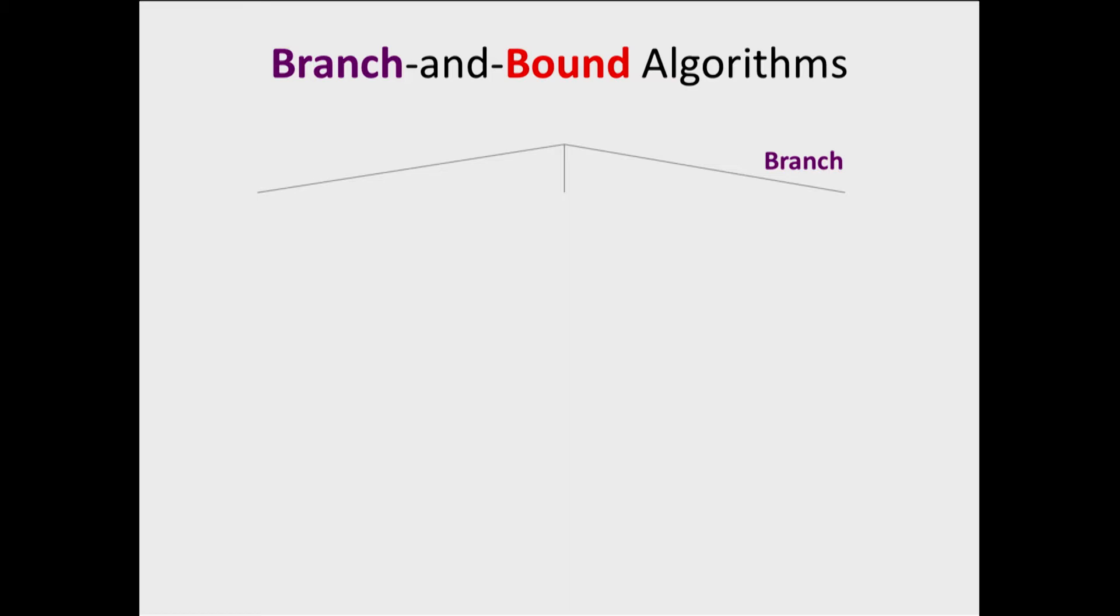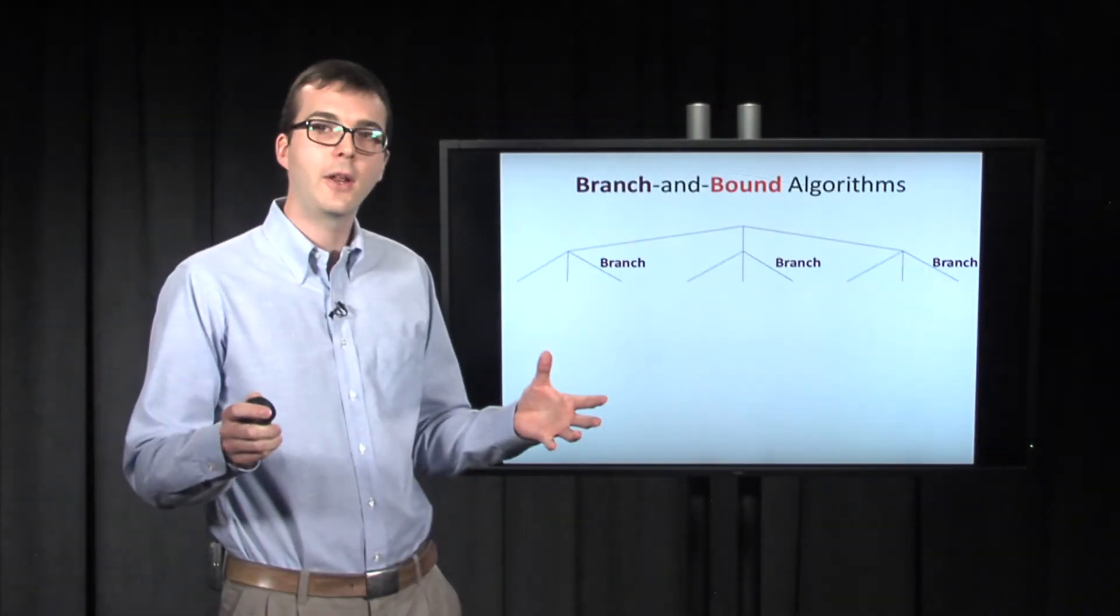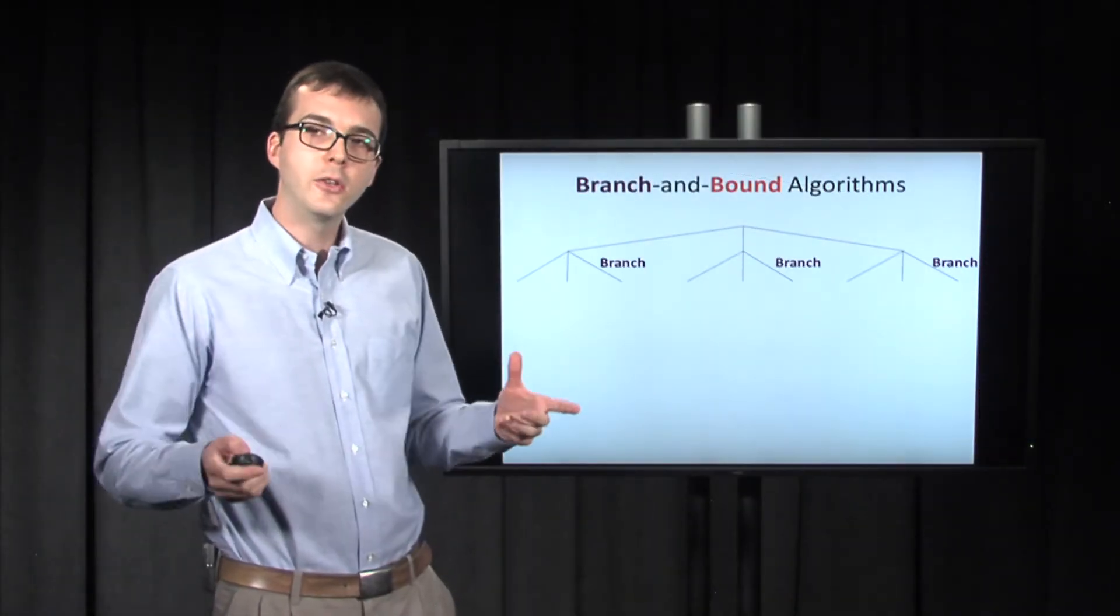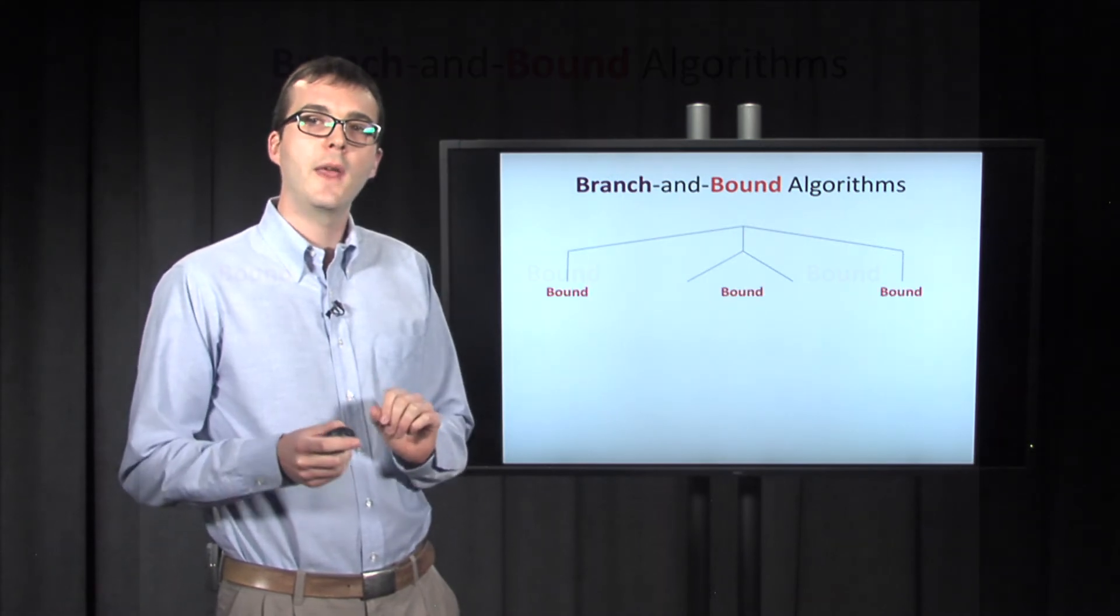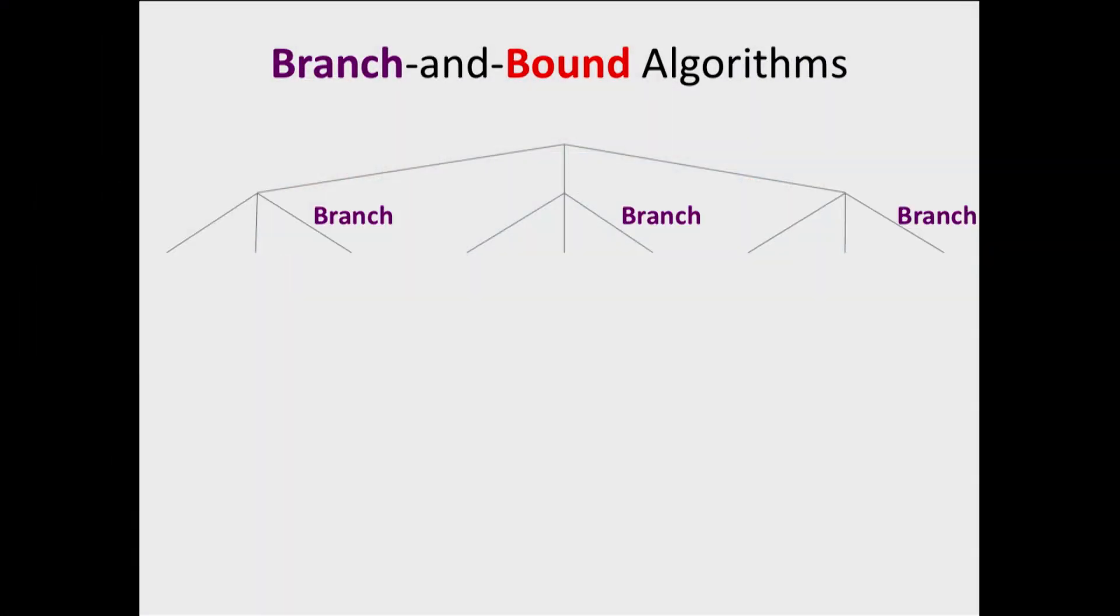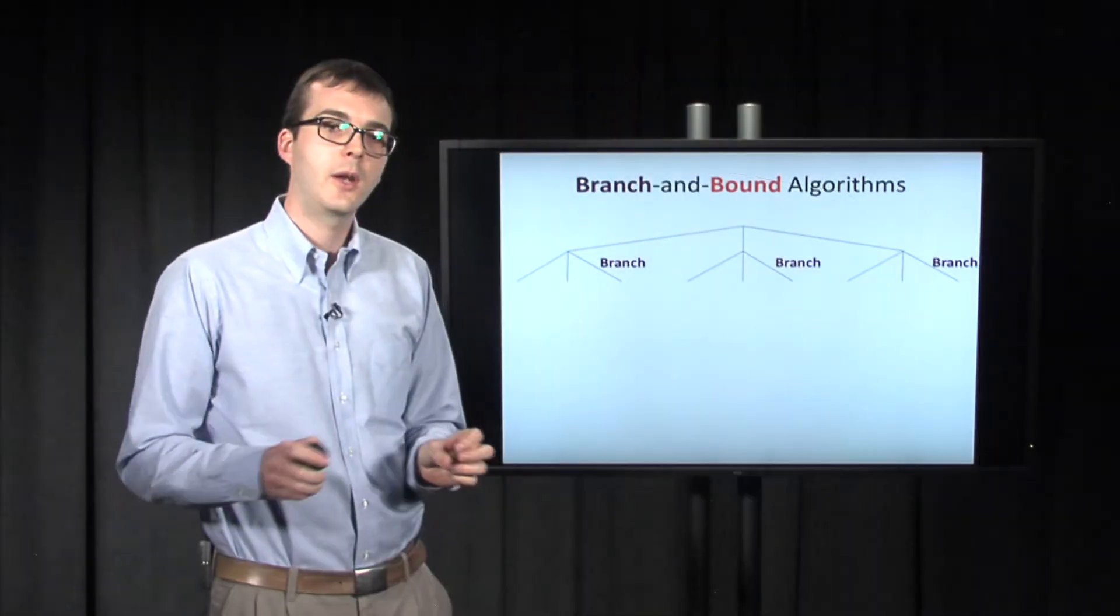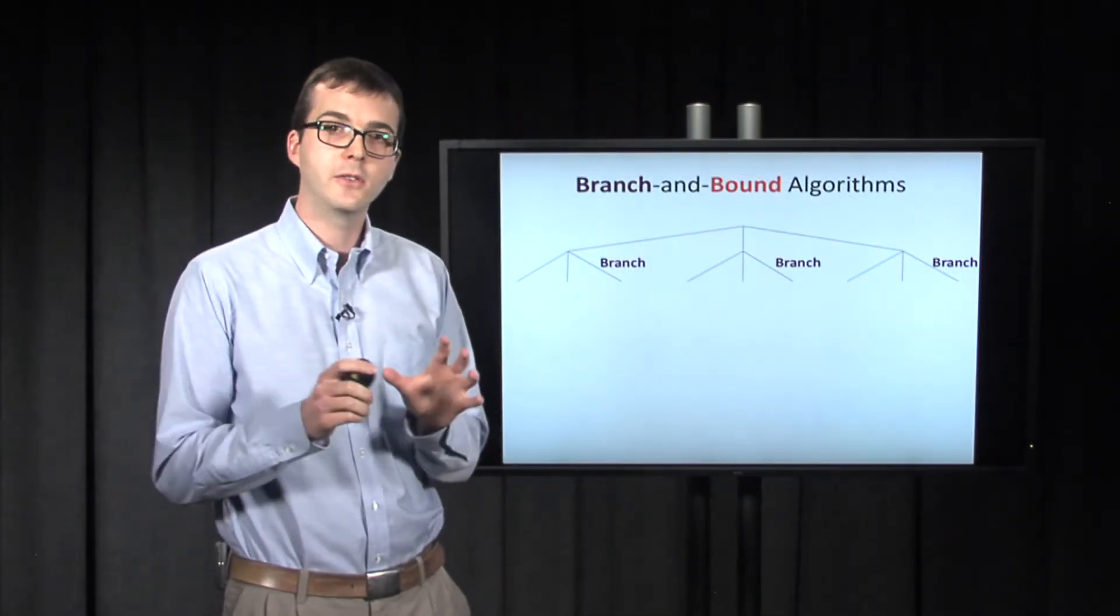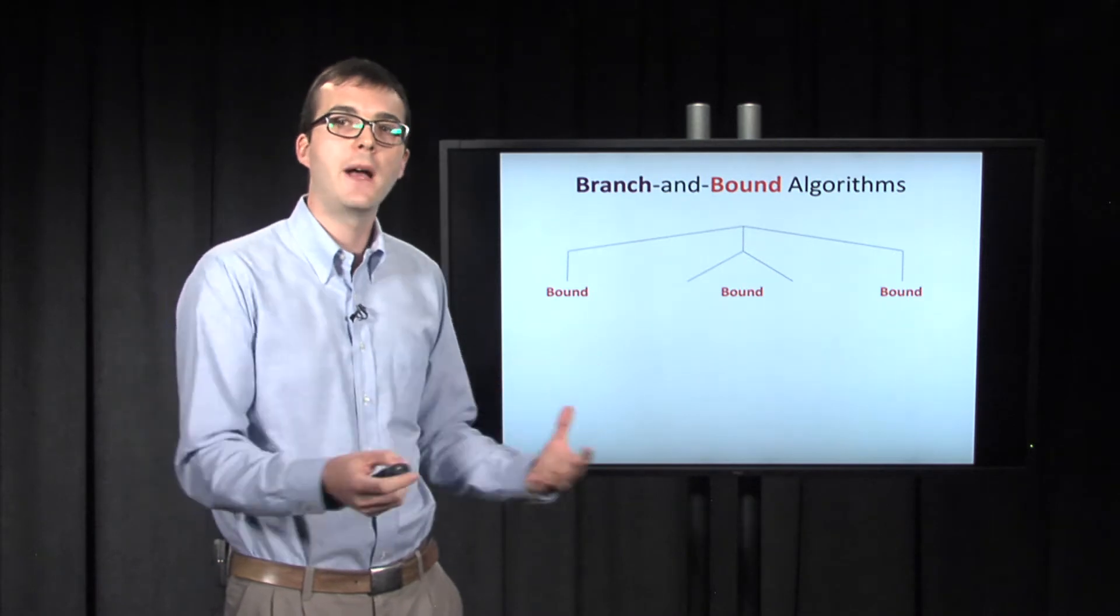Okay, so you're going to start with a simple candidate solution, and you're going to expand it or branch that out into different solutions. And then you might do this again, and then after you've branched out into a number of possible solutions or small seeds of larger possible solutions, then you're going to say, okay, can we exclude any of those? Can we eliminate any of these candidate solutions that we have? And that's called the bound step.